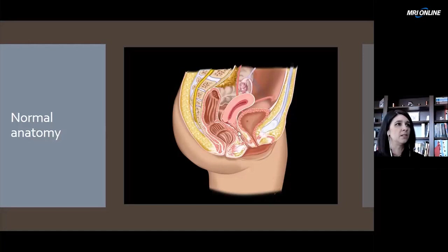Back here is going to be the vagina with the fornices — anterior, posterior — and cervix right here. And then behind that, we have the rectum posteriorly.